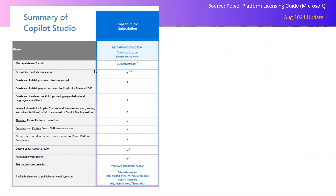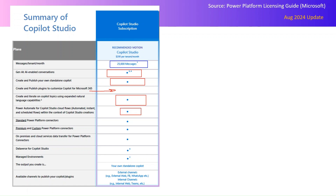This is a documentation screenshot taken from the Power Platform Licensing Guide, August 2024 update. With the Copilot Studio subscription, you get 25,000 messages per tenant per month. You can use gen AI-enabled conversations, create and publish your own standalone copilot, and iterate on copilot topics using expanded natural language capacity. However, you cannot create and publish plugins to customize Copilot for Microsoft 365 — that does not come with the Copilot Studio subscription.